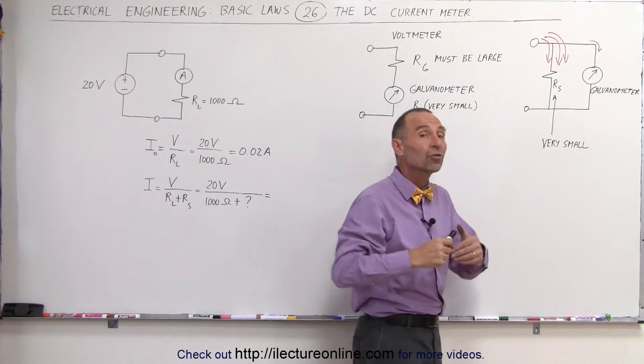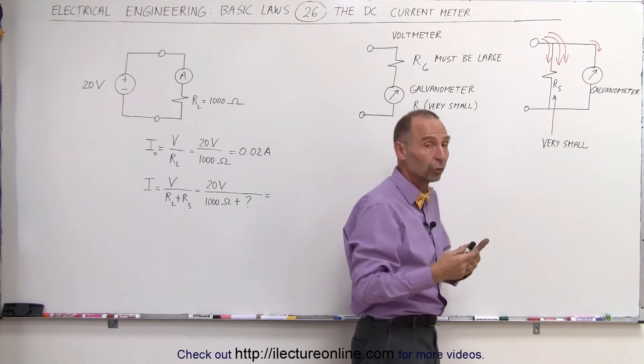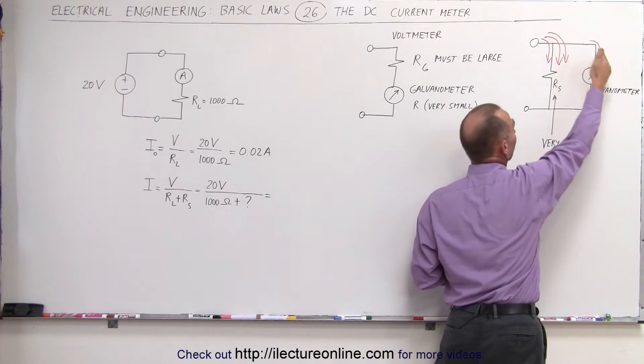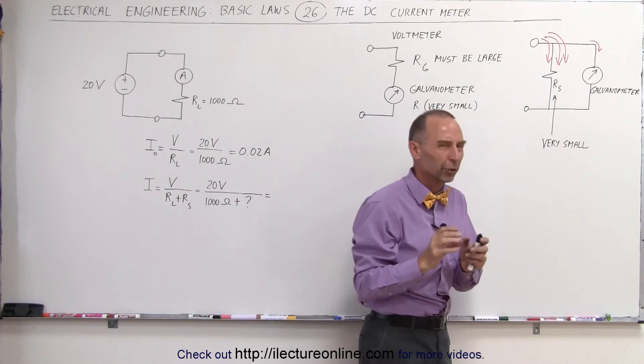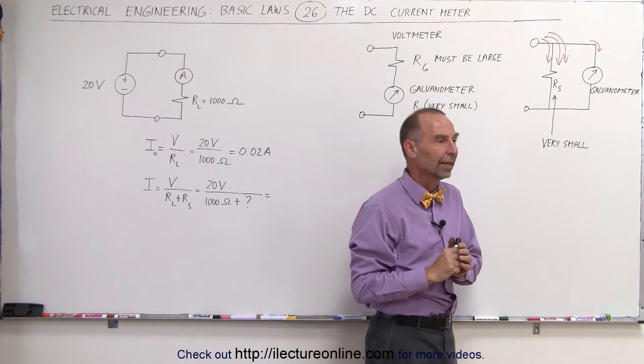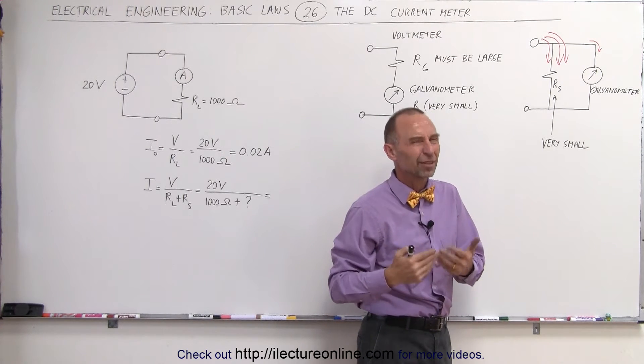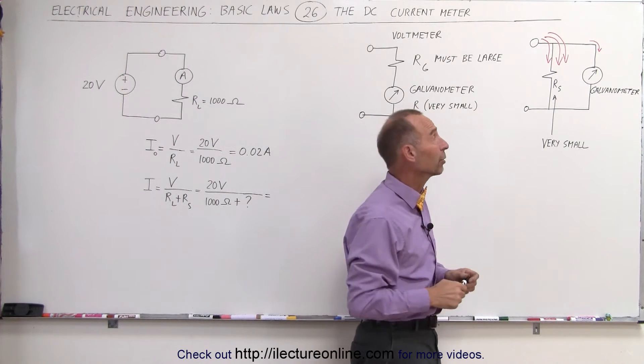The reason is that since you're trying to measure current and the current could be large, you don't want to send too much current to the galvanometer because it would destroy the galvanometer. It can only handle a certain amount of current, typically not very much, in the order of milliamps or even microamps, typically maybe like 50 or 100 microamps.